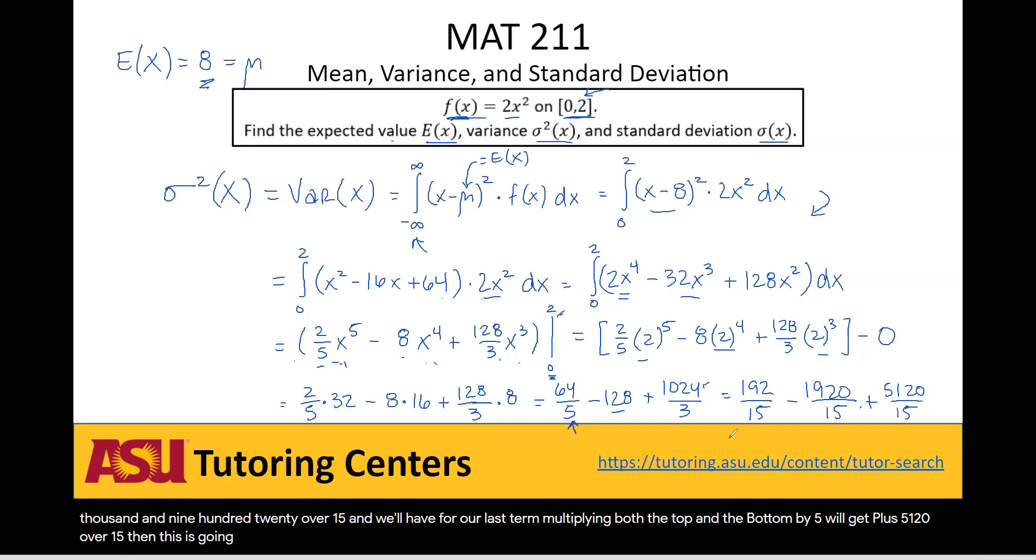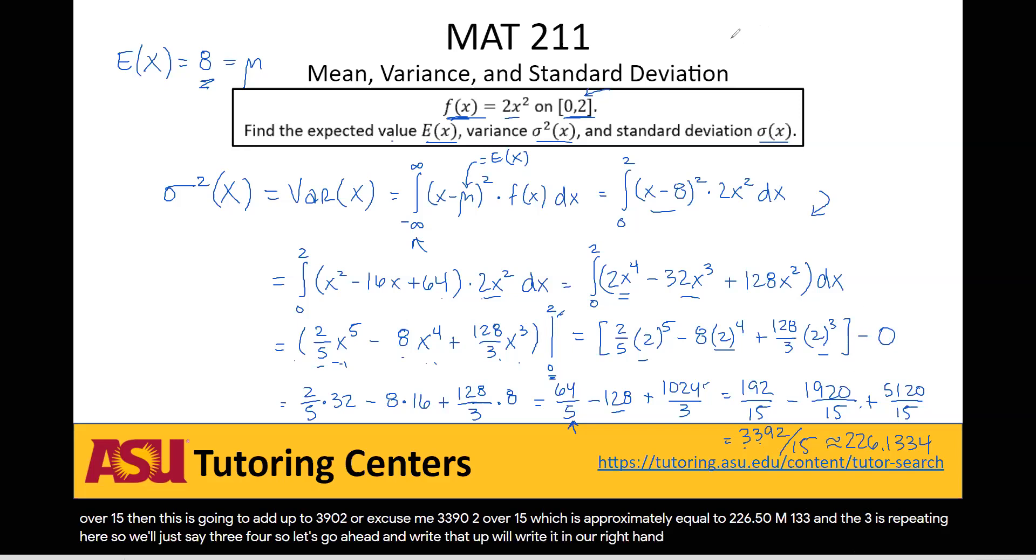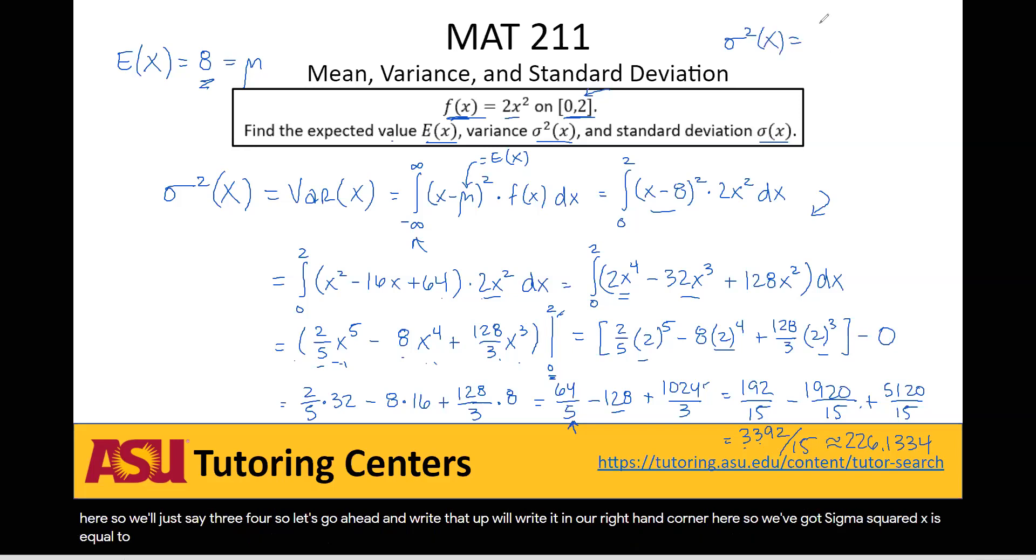Then this is going to add up to 3,392 over 15, which is approximately equal to 226.133, and the 3 is repeating here. So we'll just say 3,4. So let's go ahead and write that up. We'll write it in our right-hand corner here. So we've got sigma squared x is equal to 3,392 over 15, which is approximately equal to 226.1334.